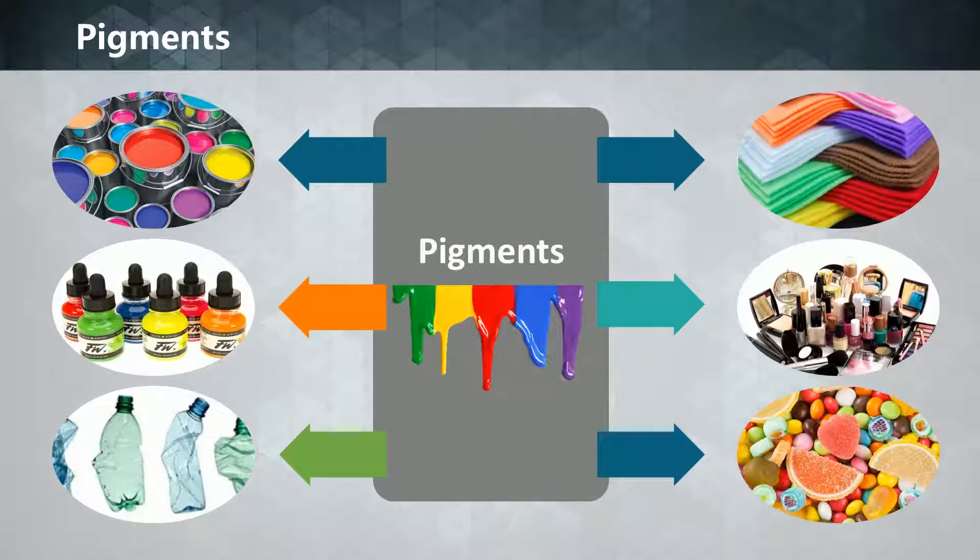Most pigments used in manufacturing and the visual arts are dry colorants, usually ground into a fine powder. This powder is added to a binder, a relatively neutral or colorless material that suspends the pigment and gives the paint its adhesion.